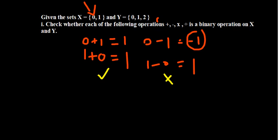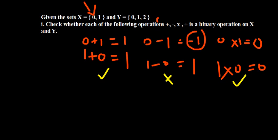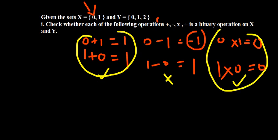Moving on to multiplication on set X: zero multiplied by one is zero, and one multiplied by zero is also zero. All results are part of the set, so multiplication is a binary operation on X. We should also note an important fact: multiplication and addition here demonstrate the commutative property, where A asterisk B equals B asterisk A — meaning irrespective of which one you start with, if they give the same result, the operation is commutative.